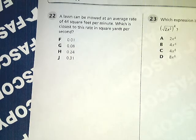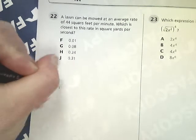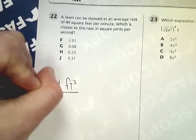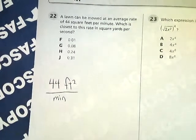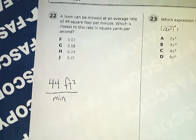The question says a lawn can be mowed at an average rate of 44 square feet per minute. What is the closest to this rate in square yards per second?